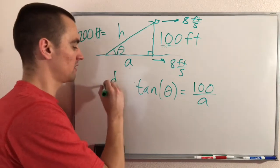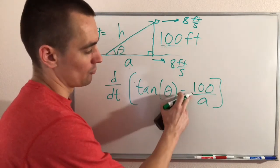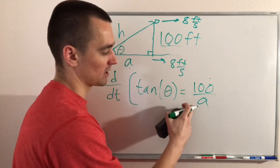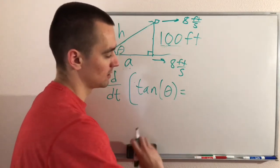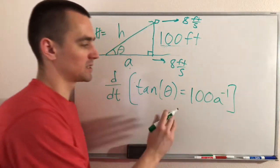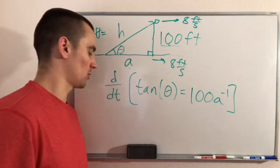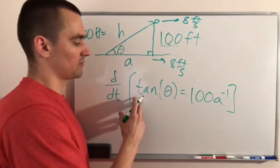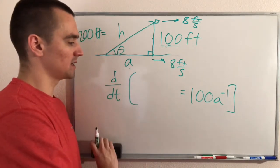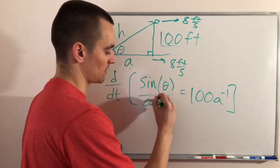Step three is the implicit differentiation step — we take the derivative with respect to time of both sides of the equation. Before we do that, let's rewrite 100/a as 100 times a to the negative first power, so we can use the power rule on the right side. To find the derivative of tan(θ), we can use the fact that tangent equals sine over cosine, and apply the quotient rule.